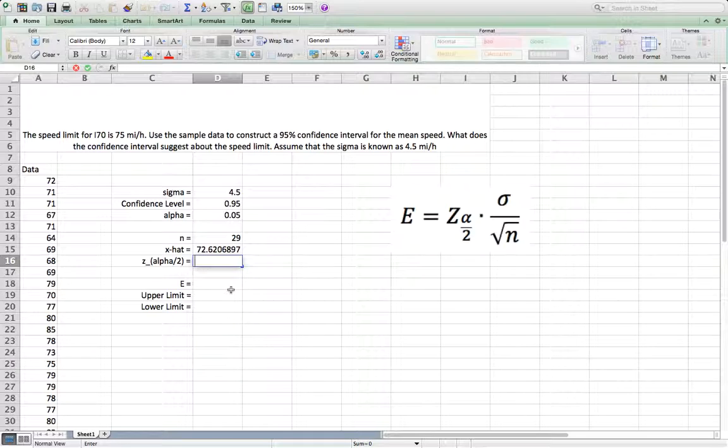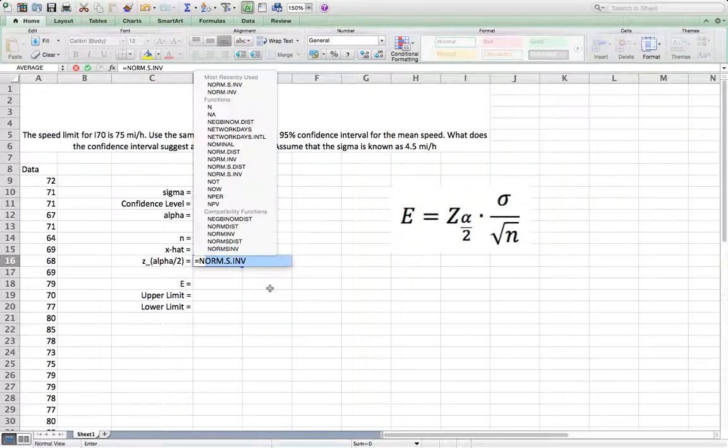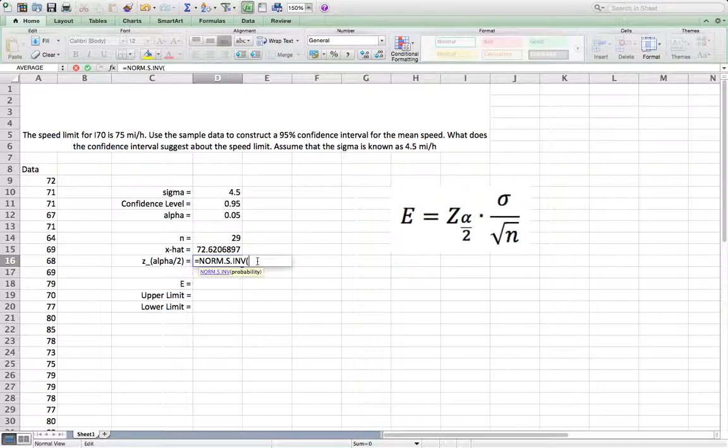Now we need to calculate the z alpha over 2. According to your book explanation, z alpha over 2 is a z score when the probability is greater than or equal to 1 minus alpha over 2. So we will use normal standard distribution inverse function.